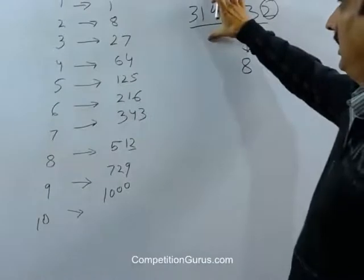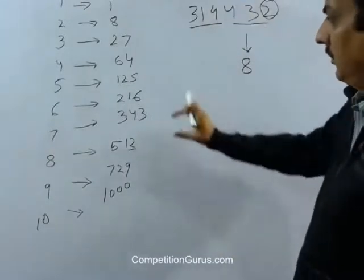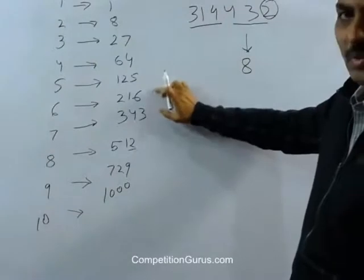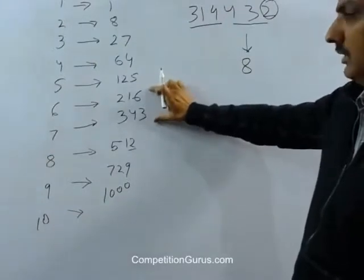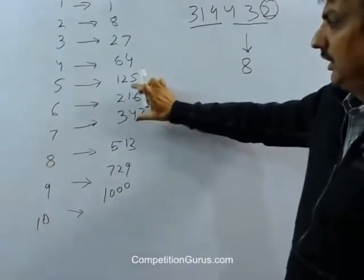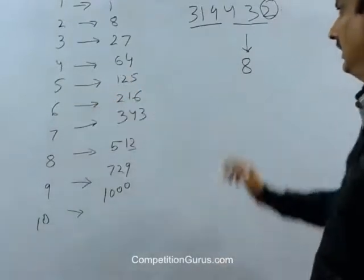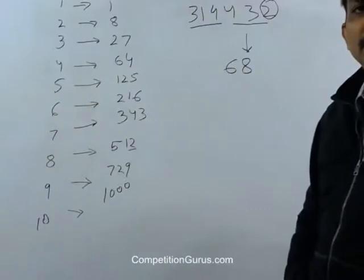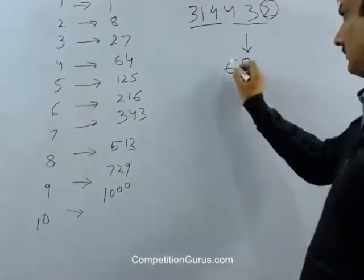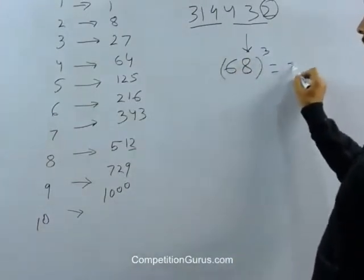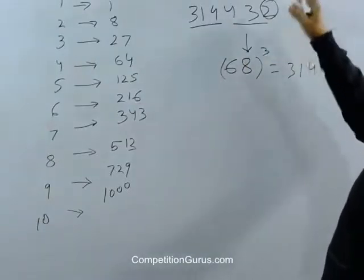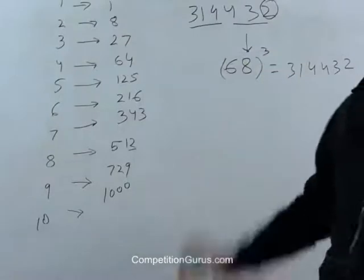And now the other part, 314. 314 lies somewhere between 6 and 7, 216 and 343. So 314 is somewhere here. So we take the smaller number here, that is 6. 68. So 68 cube is equal to 314432, or cube root of 314432 is 68.